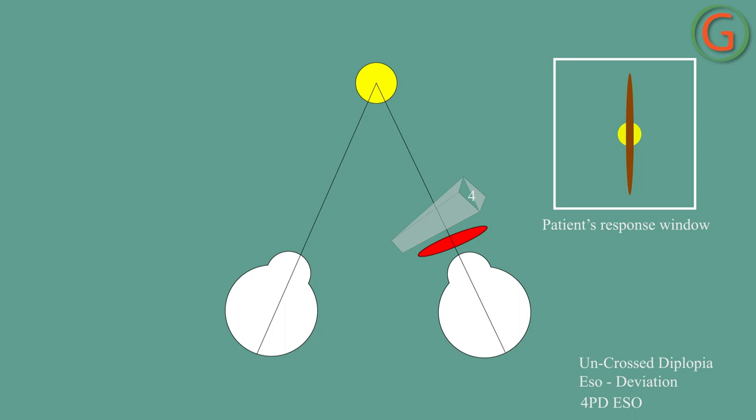To measure the vertical deviation, the ridges on the Maddox rod are held up straight. The patient horizontally sees the light. There is no vertical phoria or deviation if the horizontal line goes through the point of light.